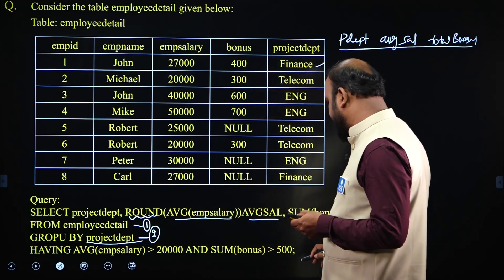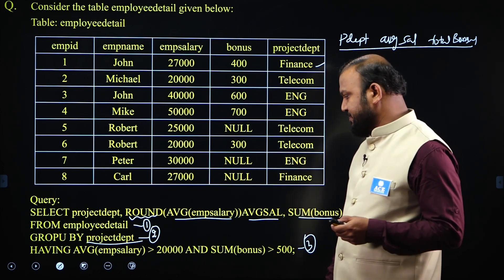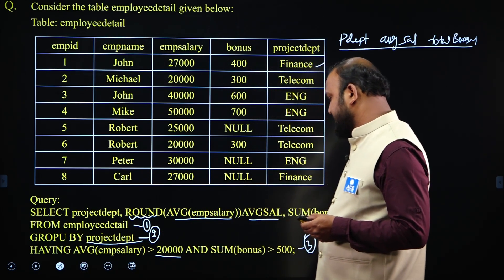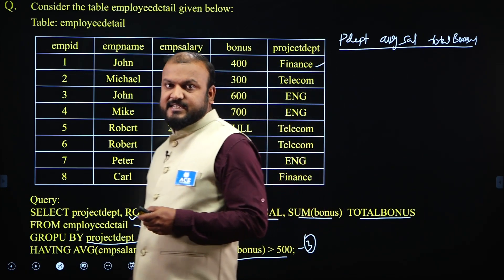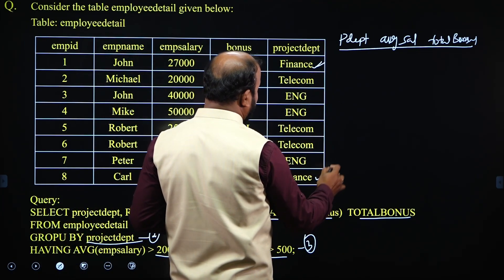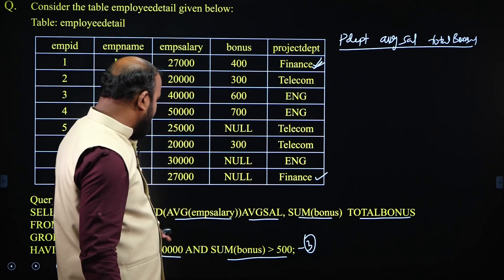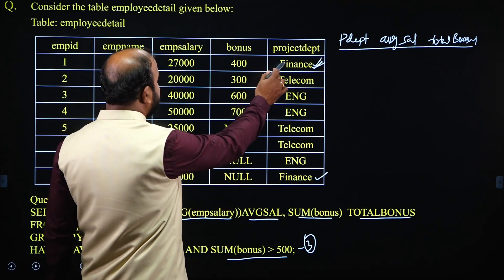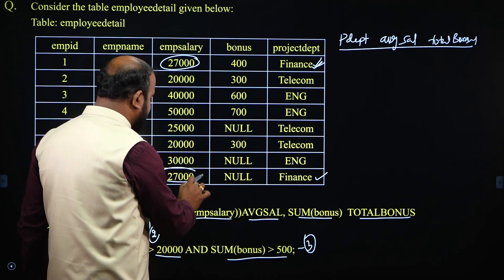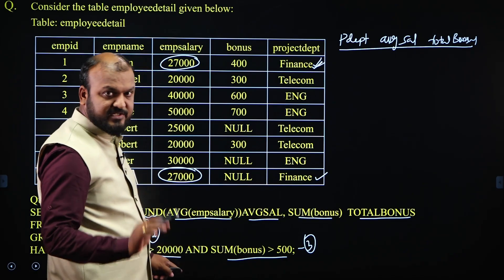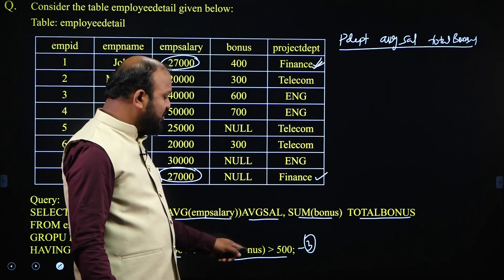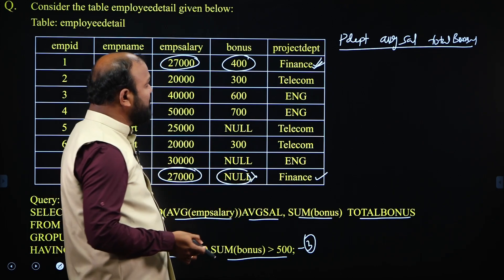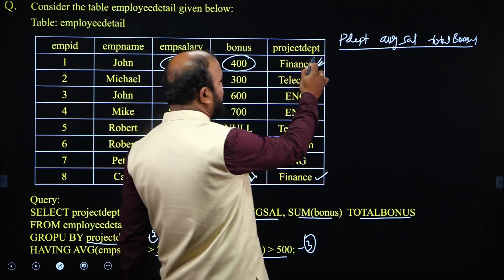The third step is the HAVING clause — having is used to select a group. The condition is: average of EMP salary greater than 20,000 AND sum of bonus greater than 5,000. For finance, we have two tuples: average EMP salary is 27,000, which is greater than 20,000 — first condition satisfied. But the sum of bonus is 400 (null is ignored), and 400 is not greater than 500, so the finance group will not appear in the output.